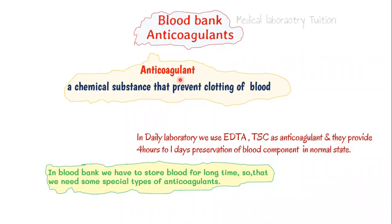What is an anticoagulant? A chemical substance that prevents the clotting of blood. In the daily laboratory we use EDTA and trisodium citrate as anticoagulants, but they only provide 4 to 1 day preservation of blood components in normal state. But in the blood bank we have to store blood for a long time, such as 7 days, 21 days, and more, so we need some special types of anticoagulants.